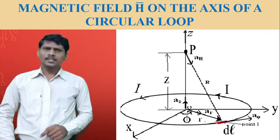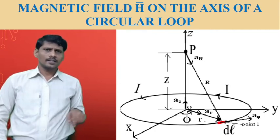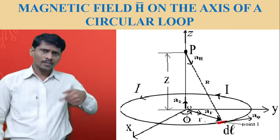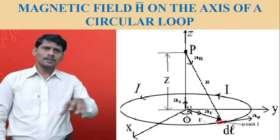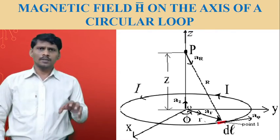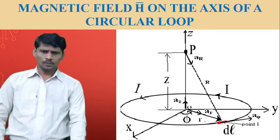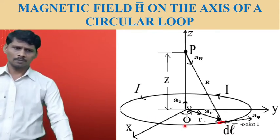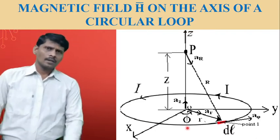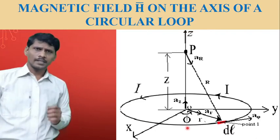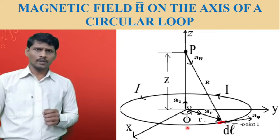Let us consider a current-carrying conductor arranged in the form of a circular loop. That current-carrying conductor is placed in the z equals zero plane, that is the xy plane, and the radius of the circular loop is small r.